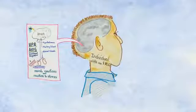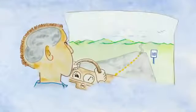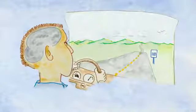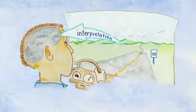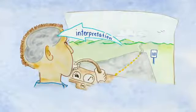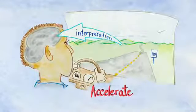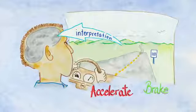However, to understand how the HPA system might affect function and, in turn, behavior, let's return to our driving analogy. Instead of thinking about the roadways as we did in Module 2, we'll focus on the driver and car on the road. Three key things are required to be a successful driver: accurate perception of the information available, the ability to accelerate when needed, and the ability to brake when needed.